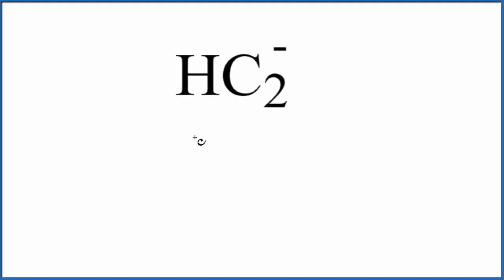Someone asked me to draw the Lewis structure for HC2 minus, so let's do it. We need to count the valence electrons first before we draw the Lewis structure for this HC2 minus ion here.